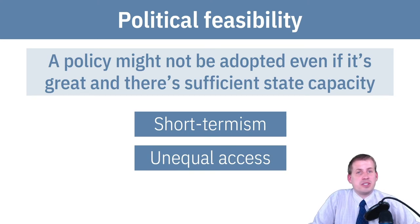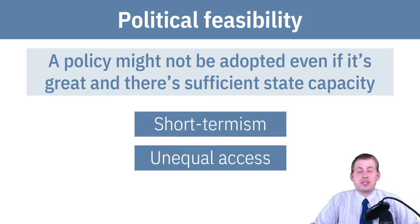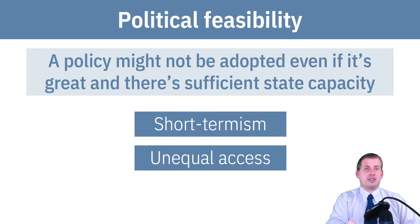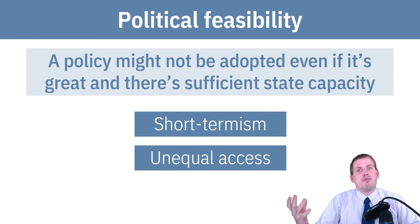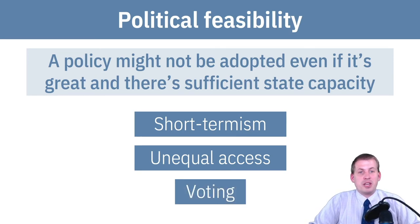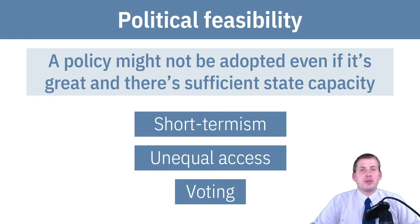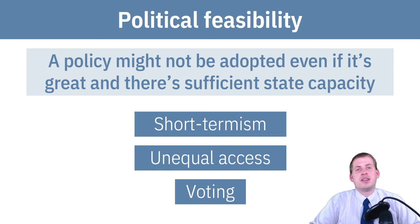You also have unequal access to the political system — small groups that are very involved in the political process can push policies that favor them specifically, leading to an unaccountable system. And voting itself can distort government accountability: depending on the order of voting and the options presented to voters, someone can have power over which things get selected through an ostensibly democratic voting process.